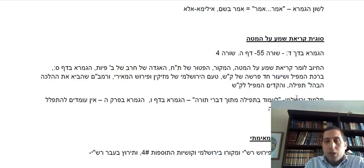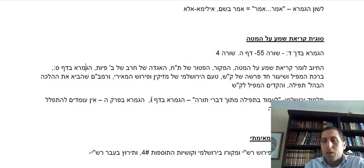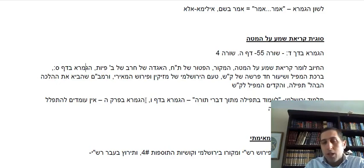The Rambam puts the priority on Birkat HaMazon Apil — it's more about a tefillah asking God for mercy than for saying Shema. We also noted that the Yerushalmi that Rashi quotes, Lo Amod B'Tefillah M'Toch Divrei Torah, relates to the Gemara in Daf Vav — that the integration of Talmud Torah with Kriyat Shema is the idea that Talmud Torah puts us in the presence of God.